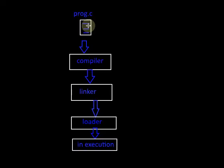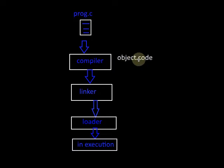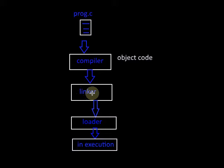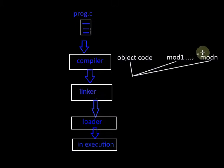If we have a program, we first compile it and generate the object code, which is binary code in zeros and ones. This object code may be referring to some external symbols or external modules which are not defined within the same object code. What the linker will do is link all those modules into this object code and generate one single object code.